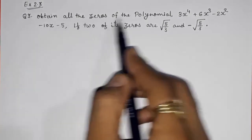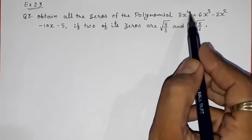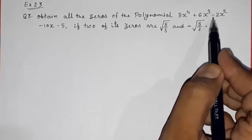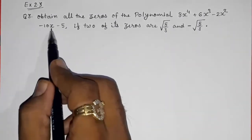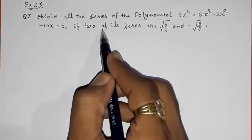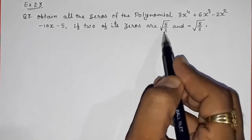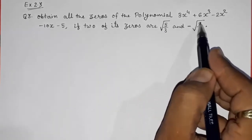Obtain all the zeros of the polynomial 3x raised to 4 plus 6x cube minus 2x square minus 10x minus 5. If two of its zeros are root 5 by 3 and minus root 5 by 3.